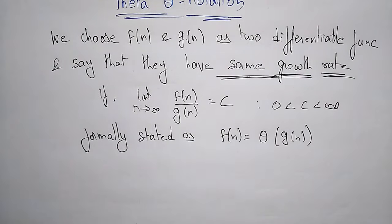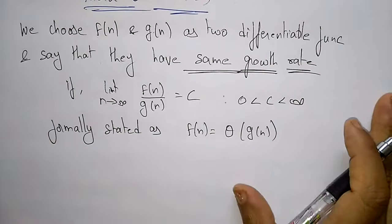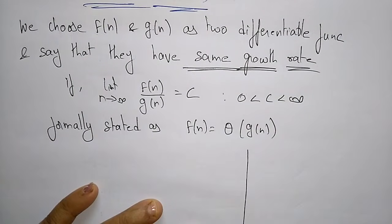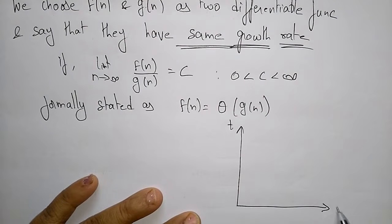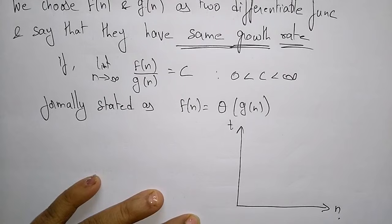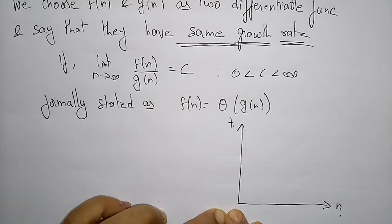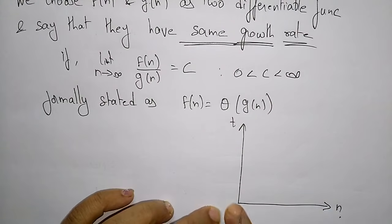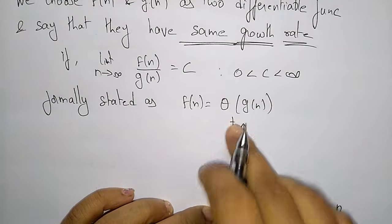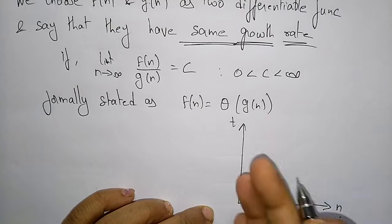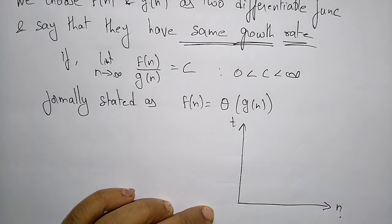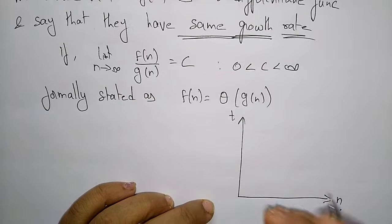Now let us see how theta notation is calculated using the graphical method. On this graph, the vertical axis is time and the horizontal axis is n, where n is the size of the input for the function. Whenever the input size is increasing, the time complexity — the growth rate — is also increasing. So as you add more statements to the function, the size of the input increases and the time increases as well.